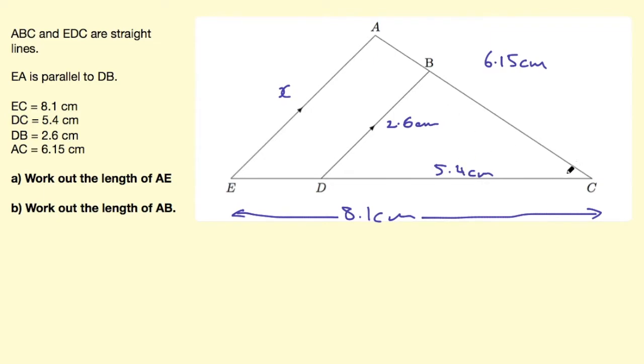I know this angle is the same between the two triangles. And because these lines are parallel, these angles must also be the same. And they're called corresponding angles in parallel lines.